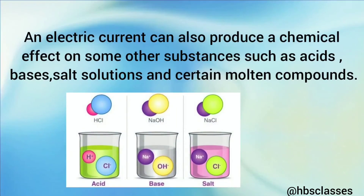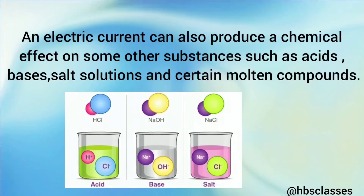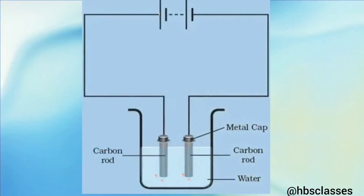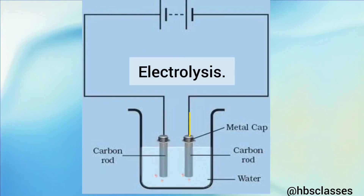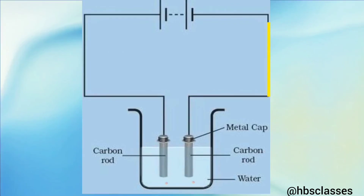Electric current can also produce a chemical effect on other substances such as acids, bases, salt solutions, and certain molten or melted compounds. When an electric current is passed through these liquids or molten compounds, chemical reactions take place. We call these chemical reactions electrolysis. When an electric current flows through a conducting solution, it causes chemical changes.